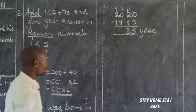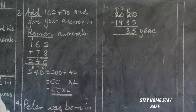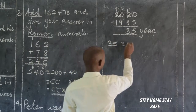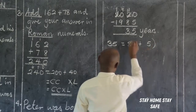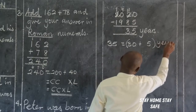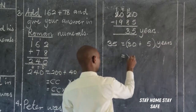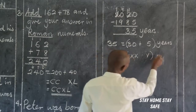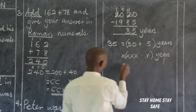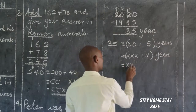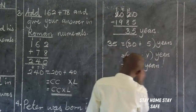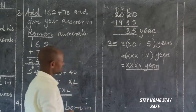Having got his age, it is in Hindu-Arabic numerals, but the answer should be in Roman numerals. So we have 35, which in expanded form is 30 plus 5. How do we write 30? X, X, X. What about 5? V. But this is someone's age, so bringing these together: X, X, X, V — and that is his age in Roman numerals.